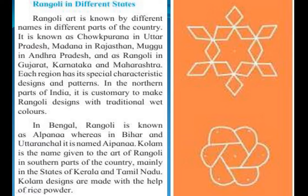In Bengal, Rangoli is known as Alpana, whereas in Bihar and Uttaranchal, it is named Aipana. Kolam is the name given to the art of Rangoli in southern parts of the country, mainly in the states of Kerala and Tamil Nadu. Kolam designs are made with the help of rice powder.